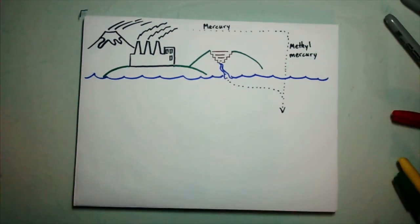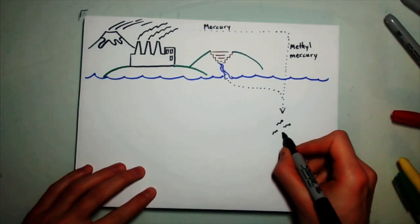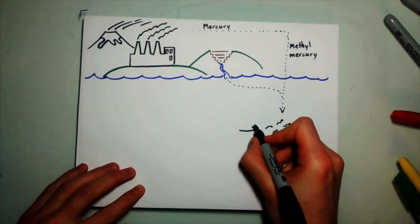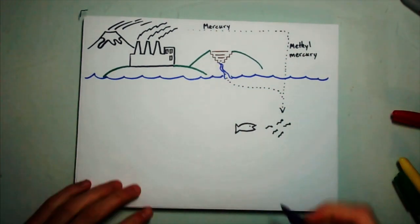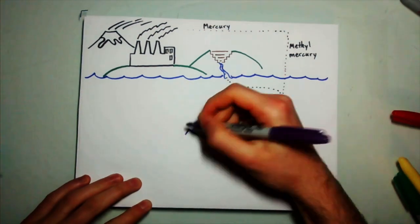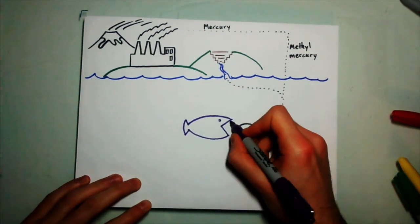Once methylmercury is present in the aquatic system, it starts to bioaccumulate and biomagnify in the food web. It is because of this process that human consumption of fish can't be unlimited, especially consumption of top predatory fish species.